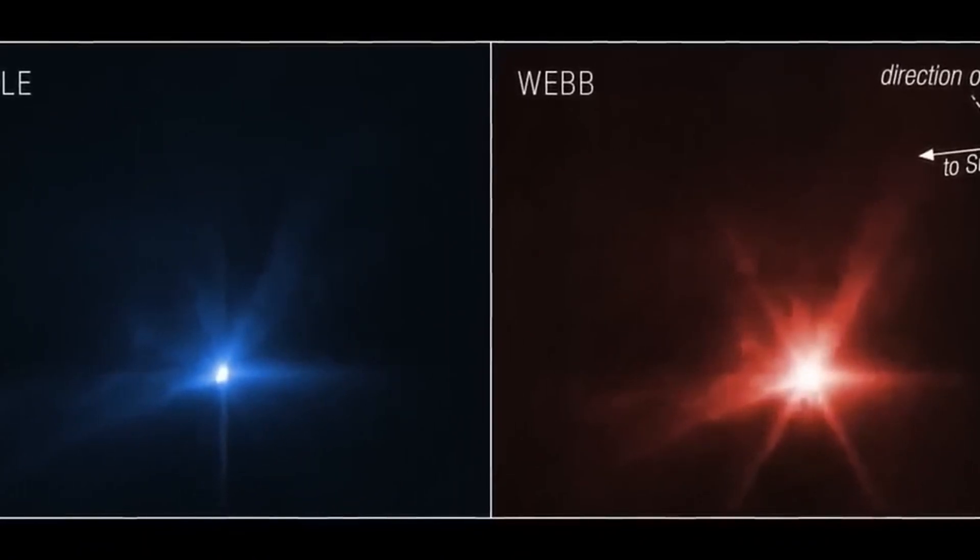NASA says that the light that Webb senses is more than 13 billion years old, which means the galaxies in the background were formed just a few hundred thousand years after the Big Bang. For the first time, we can see some of the faintest objects ever observed in the infrared.